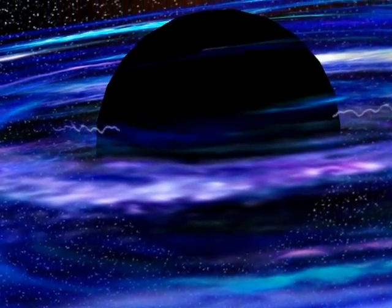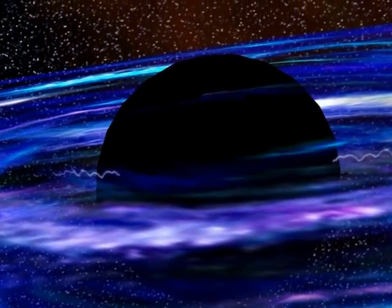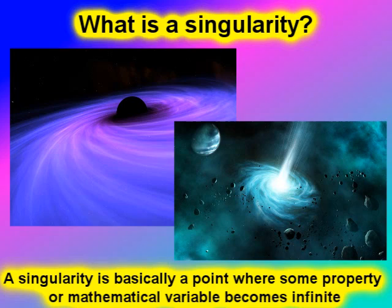Before explaining what these two theorems are about, it would be nice to know what a singularity even is. A singularity is basically a point where some property or mathematical variable becomes infinite. Both the Hawking-Penrose and BVG theorems,